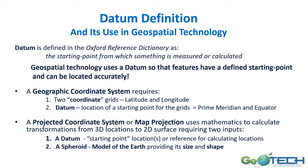For projected coordinate systems or map projections, we use mathematics to calculate the transformations between that 3D surface and a 2D surface. This requires two inputs: a datum, which defines the starting point for the locations or the reference to be calculated from, and a spheroid that models the shape and size of the earth.